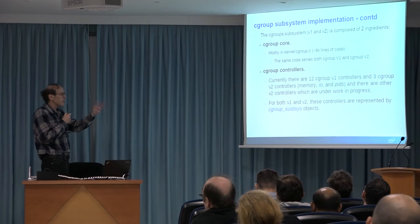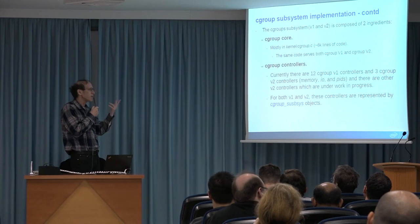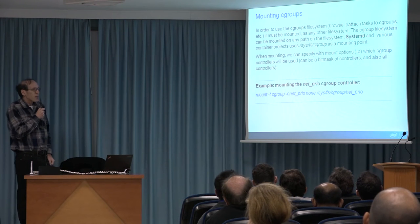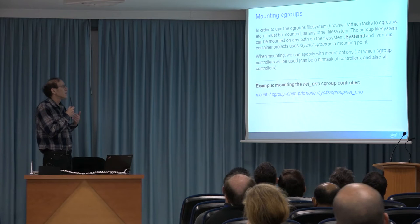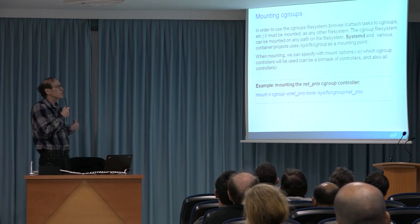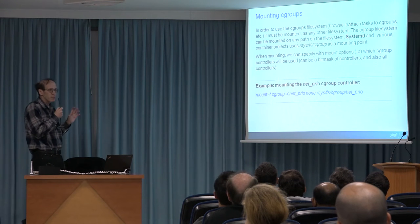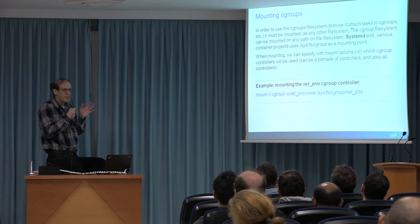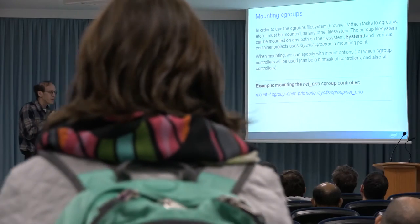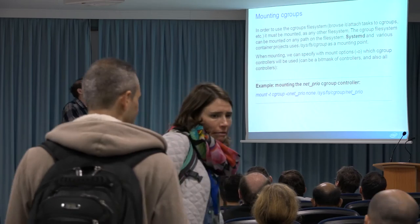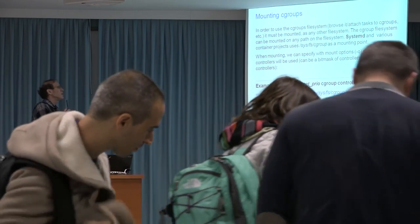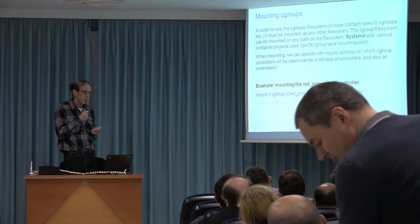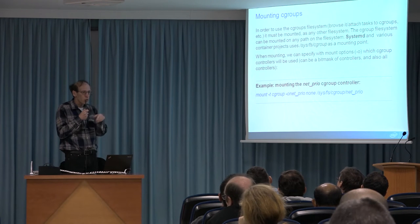In order to work with Cgroups, the first step is to mount them. You can mount Cgroups — both V1 and V2 — wherever you want on the file system. Usually applications use /sys/fs/cgroup, which is generated automatically by the Cgroup subsystem. System D and most container projects use this mounting point. When you mount the Cgroup subsystem, you can specify by mount option which controller you want to use — one controller, a combination, all controllers, or even none.